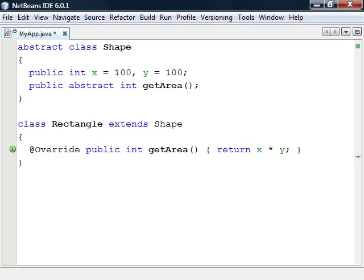Rectangle is then forced to override the abstract method, unless Rectangle is declared abstract as well, in which case it does not have to implement any abstract methods.